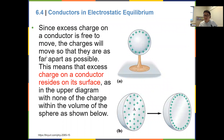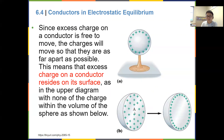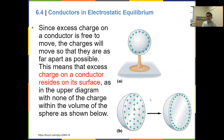Now let's look at conductors in electrostatic equilibrium. First, charge on a conductor resides on its surface. Since charges are free to move inside a conductor, they repel each other and redistribute to the outer surface. So all charges end up on the surface.